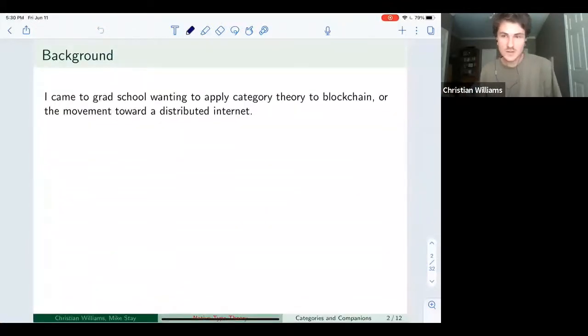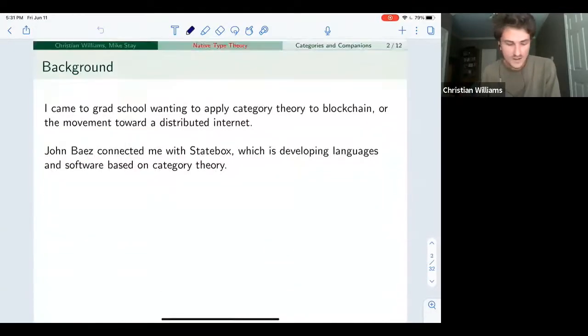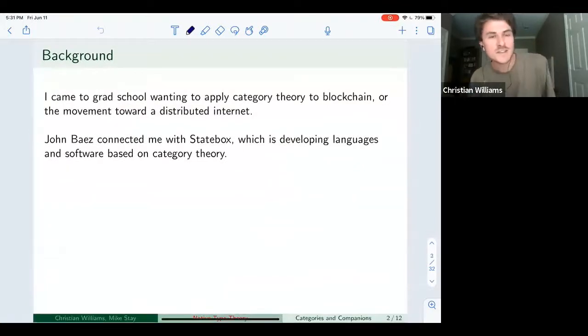So I came to grad school excited about the movement toward a decentralized internet and the belief that it will be vital to a stable future. So I came to John Baez saying that I wanted to apply category theory to blockchain. And he said, I know nothing about that. I have absolutely no idea what that is. But he said, oh, I recently got an email about that exact thing.